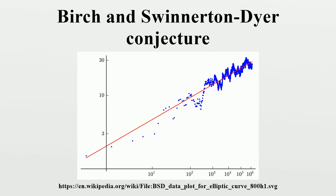Consequences: Much like the Riemann hypothesis, this conjecture has multiple consequences, including the following two. Let N be an odd square-free integer. Assuming the Birch and Swinnerton-Dyer conjecture, N is the area of a right triangle with rational side lengths if and only if the number of triplets of integers satisfying a given condition is twice the number of triples satisfying another. This statement, due to Tunnell's theorem, is related to the fact that N is a congruent number if and only if the elliptic curve has a rational point of infinite order.